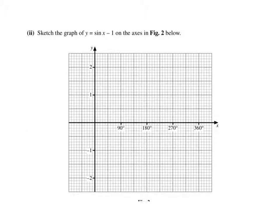So the sine of 0, take away 1, is minus 1. The sine of 90, take away 1, is 0. 180, take away 1, is minus 1.